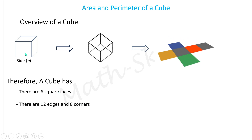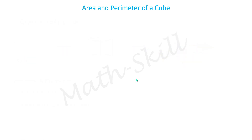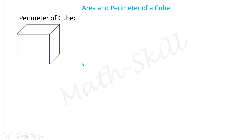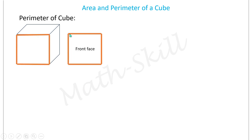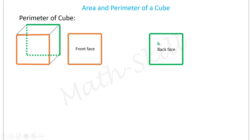A cube has six square faces, 12 edges, and eight corners. Now let us see how to find the perimeter of a cube. We have six square faces as discussed. Consider the front square face, marked in orange, and the back green-colored face, which is also a square. There are edges connecting the front face to the back face, marked in purple here.